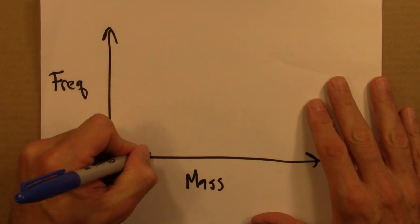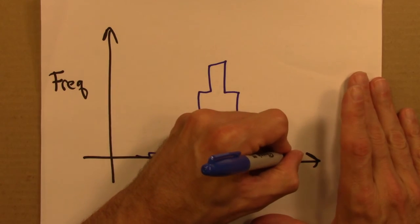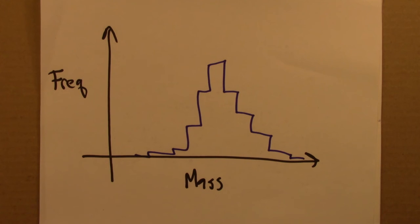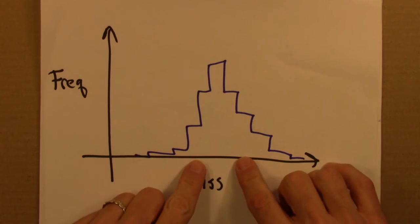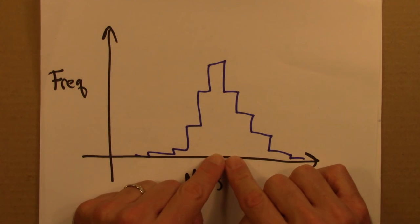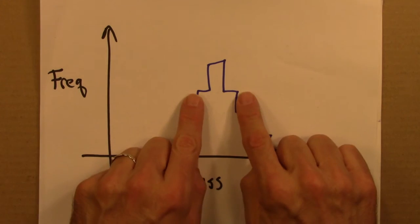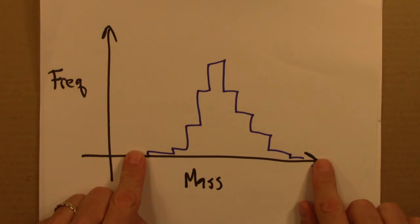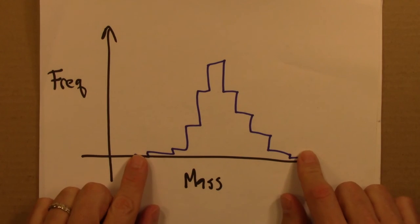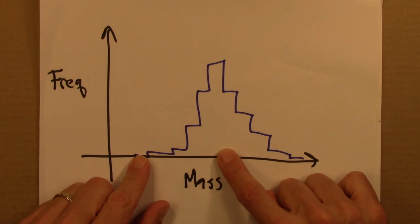But I might expect this histogram might end up looking something like this. And what this would show me is that there are a lot of books concentrated around here. Maybe this is about a pound. It seems like most books are about a pound. And then there are a fair amount of books that are a little bit on either side. There aren't too many books that are really, really heavy or really, really light. So there's a nice sort of well-defined range. So this is just another way of saying that books have a typical mass, probably about a pound or so.